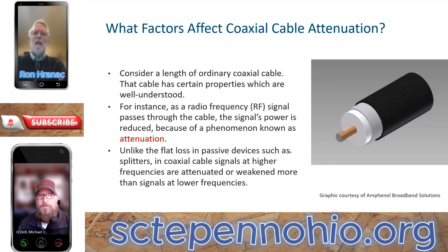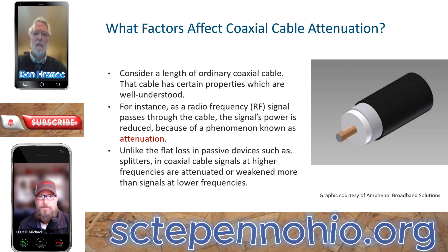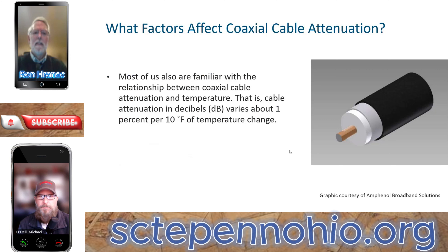An interesting thing about coaxial cable attenuation is that if we compare the attenuation through a length of coax to attenuation through a splitter or directional coupler or something, we have flat loss in passive devices. But in coaxial cable it's actually a tilted loss — the loss is greater at higher frequencies and less at lower frequencies. So that's all pretty well understood.